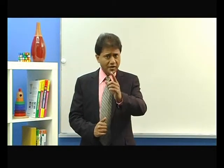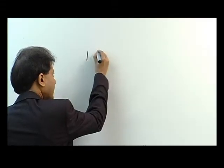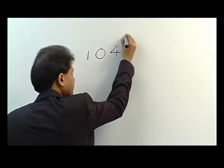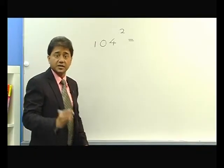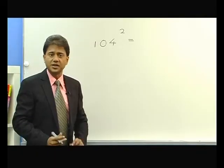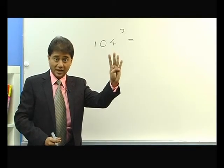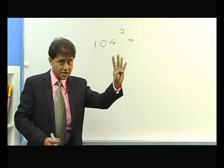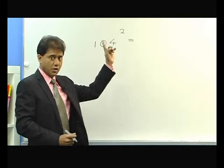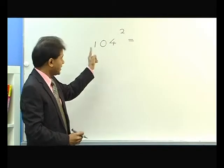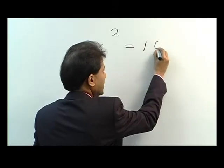For example, you have to square 104. We take the difference from 100. What is the difference from 100? 4. Now this 4 is very very important. You add this 4 to 104, so 104 plus 4 gives you 108.